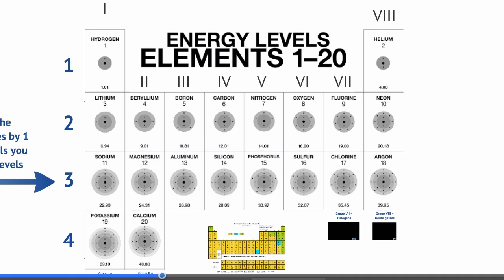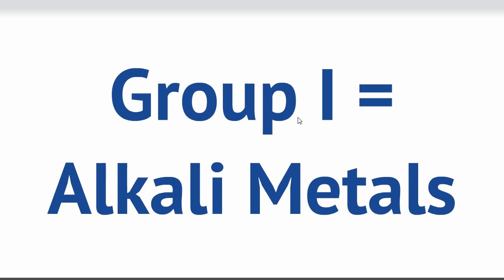Group 1 actually has a special name — they're called the alkali metals, and these metals are highly reactive. The reason for that is if an element almost has a full outer shell, it will be very reactive. These elements have one extra electron in their outer shell, so the easiest way for them to get a full shell is just to lose that electron, because the next shell is already essentially full. They all tend to try and lose that one electron, reacting quite violently to do so.